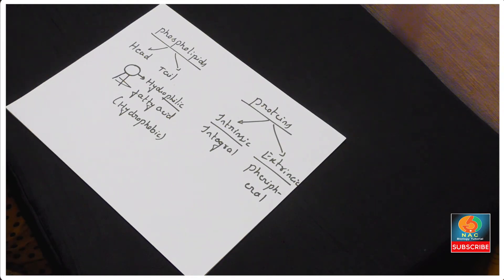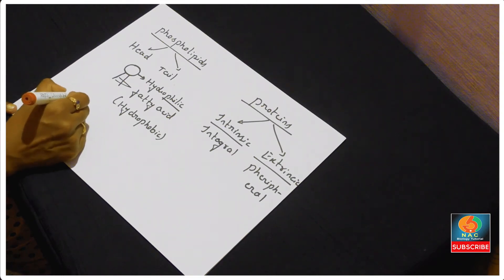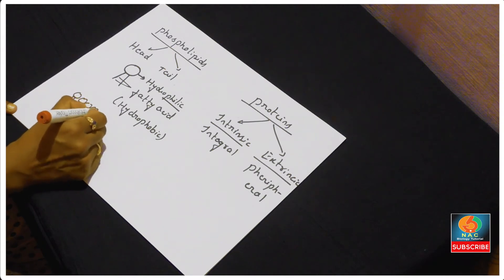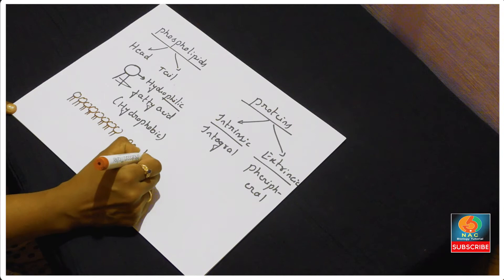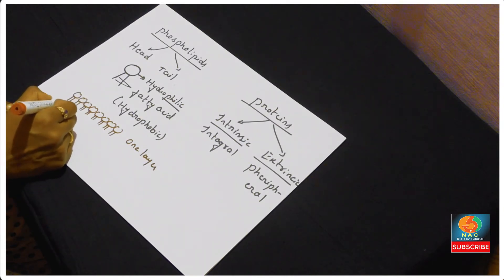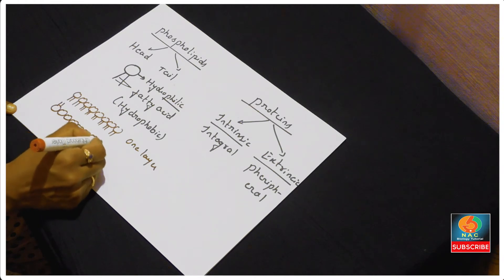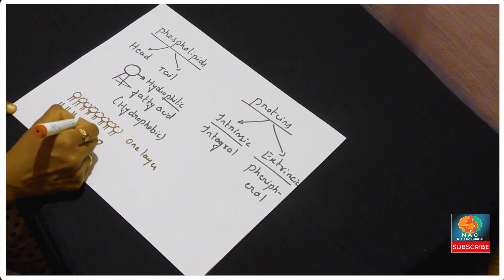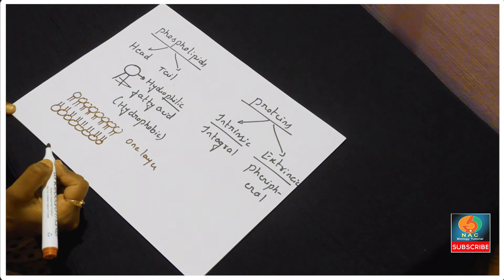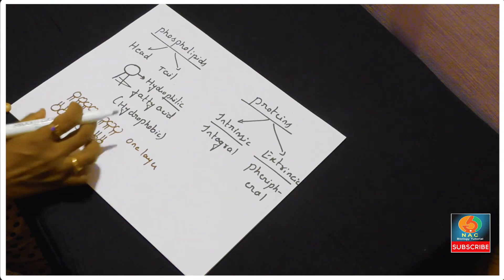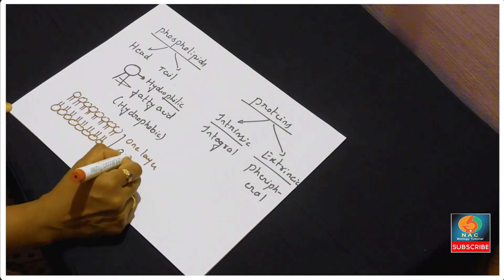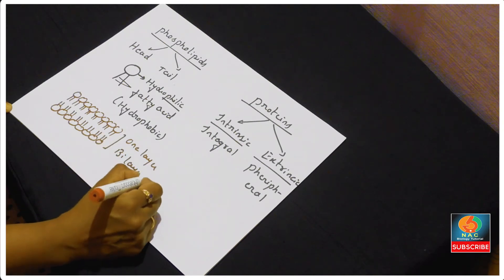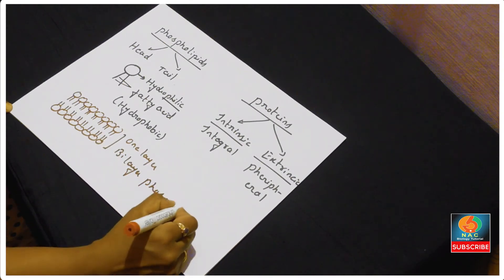The phospholipids are joined to each other — there are many heads joined together with tails present alongside, forming one particular layer. Like that, one more lipid layer with heads and tails joins to form a lipid bilayer. A cell membrane consists of this bilayer lipid, which we call a bilayer phospholipid.